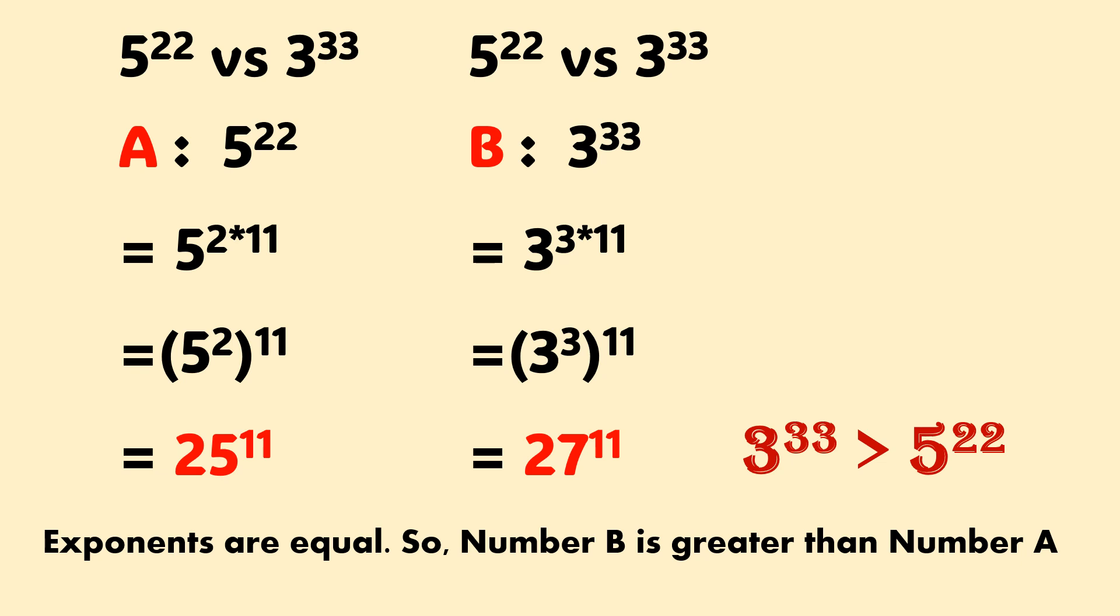Look at column B. 3 power 33. Exponent 33 may be written as 3 into 11. So we get 3 cubed, whole power 11, which is equal to 27 power 11.